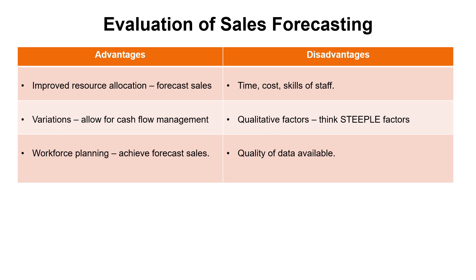Some further evaluation points on the advantages and drawbacks of the technique. In terms of advantages: if you can forecast your sales, you have a target to work towards — remember SMART targets: Specific, Measurable, Achievable, Realistic, Time-related. So if you're expecting sales to be up 20% next year, you can plan now to allocate sufficient resources. Variations also allow for cash flow management — if you expect below-trend performance, do you need to look at your liquidity management?